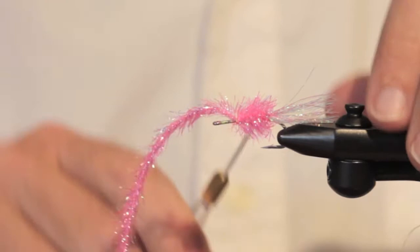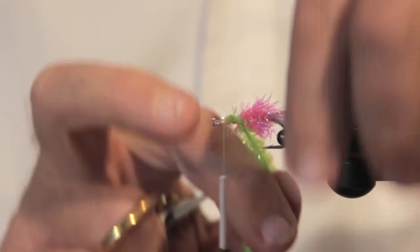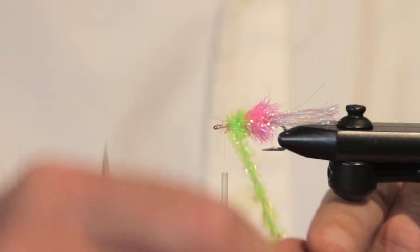You can tie this in orange and red. You can make it purple with an orange head. These are all good color combinations. This is a cactus chenille, real sparkly. Get the idea.